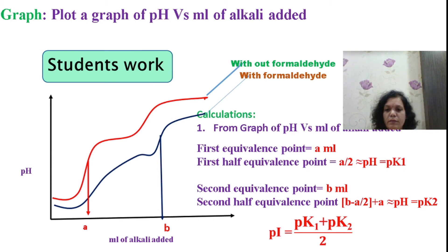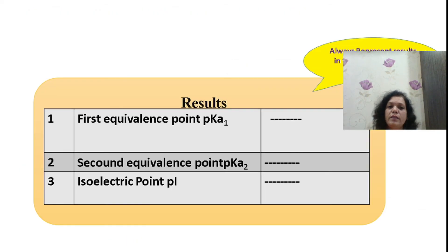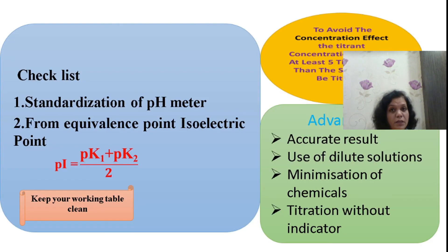Report all readings in your result table: first equivalence point, second equivalence point, and isoelectric point. Checklist for offline practical: ensure your pH meter is standardized well and results are reported in tabular form. To obtain accurate results, always use dilute solutions. You are minimizing chemical usage, making this a green route. Titration without indicator is an advantage of pH-metric titration.